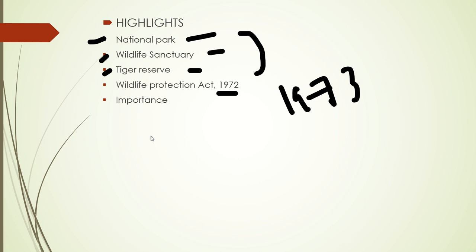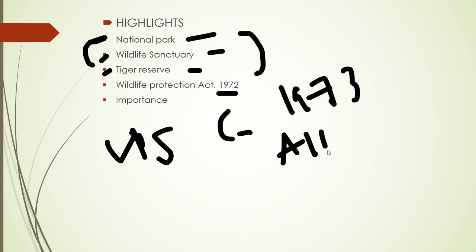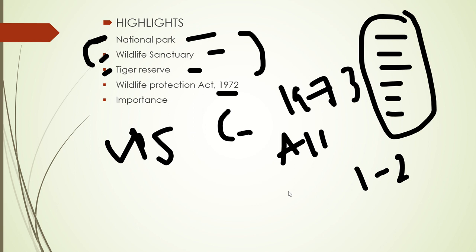Now, why is this topic very important? Right from UPSC to all state level examinations, direct questions are asked from national parks, wildlife sanctuaries, and tiger reserves — such as when it was established, any reservoirs or dams present, which river flows through it, what type of forest exists, and the location. So we can get one to two marks from this topic in state level examinations.